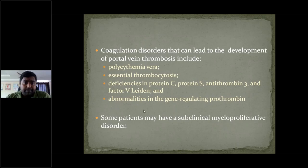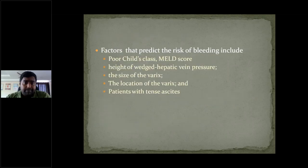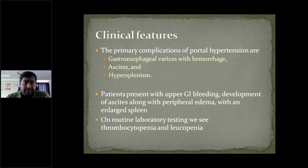Some patients may have subclinical myeloproliferative disorders. The primary complications of portal hypertension include esophageal varices with hemorrhage and ascites with hypersplenism. If on examination the spleen is enlarged with a history of binge alcohol intake, patients should undergo upper GI endoscopy to rule out esophageal varices. In patients with cirrhosis it is better to screen for esophageal varices once a year.